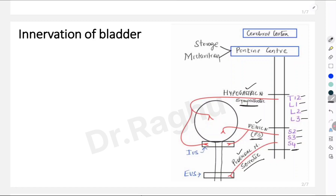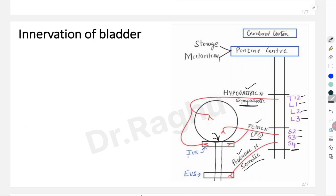The wall of the urinary bladder has a smooth muscle called the detrusor muscle. At the neck of the bladder we have a sphincter called the internal urethral sphincter, and distally we have another sphincter called the external urethral sphincter. Now let's understand what happens when there is sympathetic stimulation, parasympathetic stimulation, and somatic nervous system stimulation.